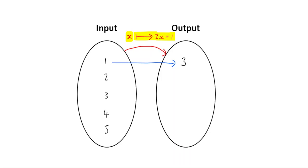2 is mapped onto 5. 3 is mapped onto 7. 4 is mapped onto 9. And 5 is mapped onto 11. You can go and confirm all of those yourself, right? 2 times 2 is 4 plus 1 is 5. 3 times 2 is 6 plus 1 is 7. And so on and so forth.